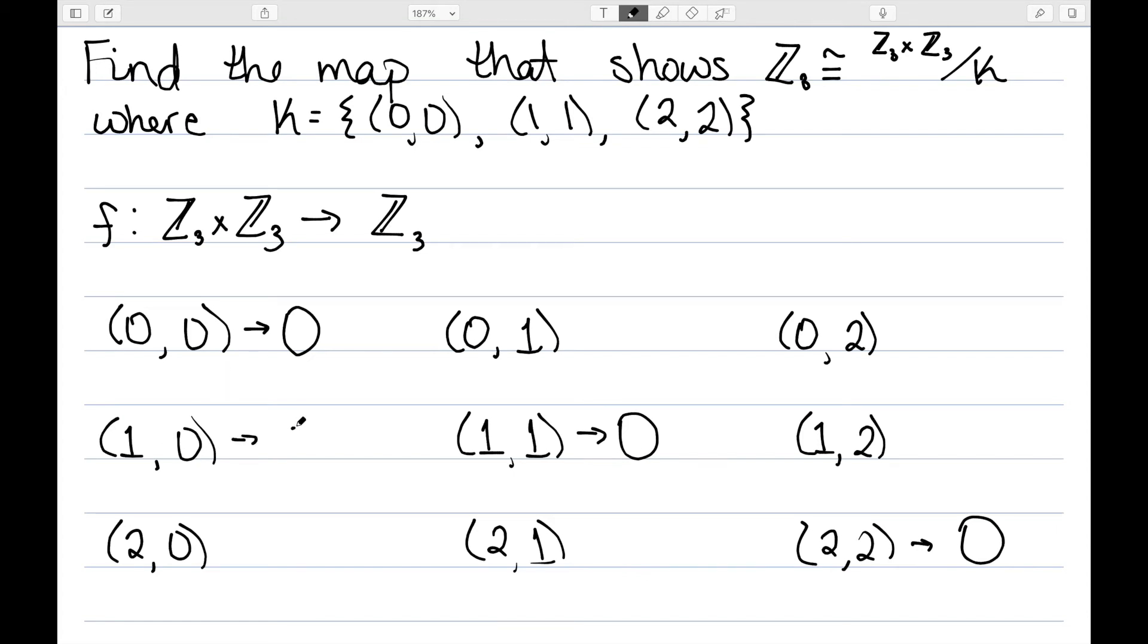Let's suppose (1,0) maps to 1. Since (1,0) plus (1,0) is (2,0), that should map to 1 plus 1 or 2. We also know that (1,0) plus (0,1) is (1,1), so 1 plus what is 0. That would then need to map to 2. (2,0) plus (0,1) is (2,1), 2 plus 2 needs to go to 1. (0,1) plus (0,1) is (0,2), so 2 plus 2 is 1.